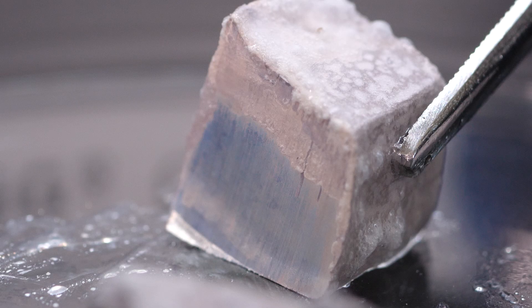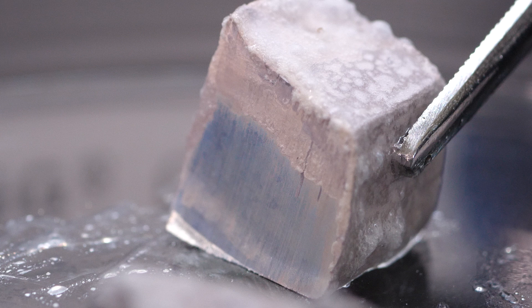Notice that the lump of sodium is shiny where we cut it. Most metals have a shiny luster, but when sodium is exposed to air, it reacts with oxygen, which produces a dull gray coating of sodium oxide.